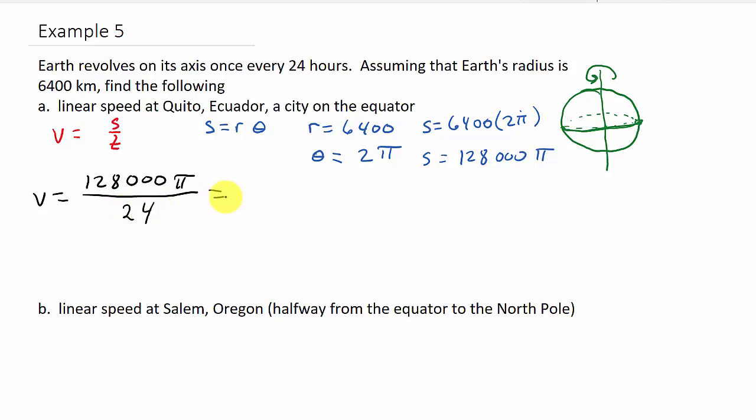Now all we have to do is punch this into our calculator. So 128000 times pi, and then divide that by 24. And I'll just round it to one decimal. So 16755.2, and that's kilometers per hour. So there's the distance. I'm sorry, that's the linear velocity there.